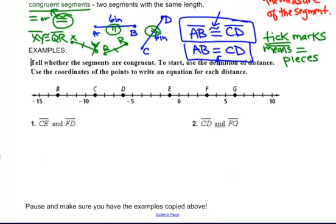Let me give you some examples of what you're going to see in your homework. You're going to be given a number line with lots of segment points on it. The directions will say tell whether the segments are congruent. This vocabulary word means equal. To start, use the definition of distance. Use the coordinates of the points to write an equation for each distance. They say to start, I'm going to find the length of CE. It's the absolute value of where is C? This point is at negative 9. Take away, where is E? This point is at negative 1.